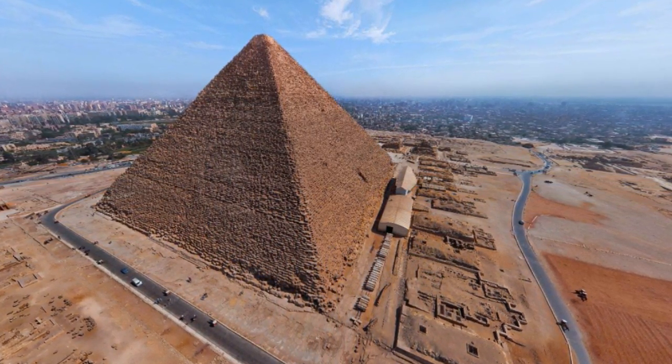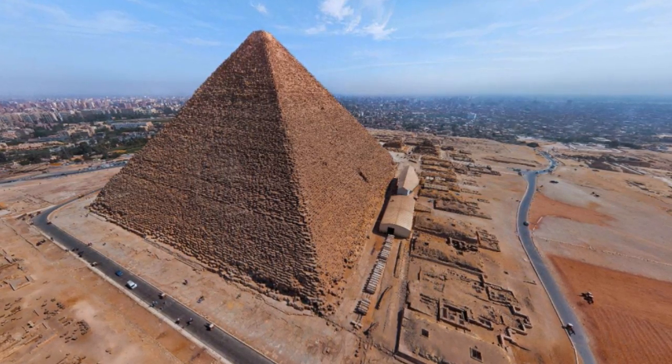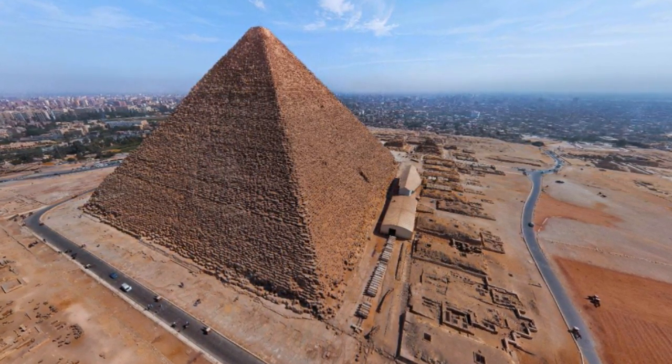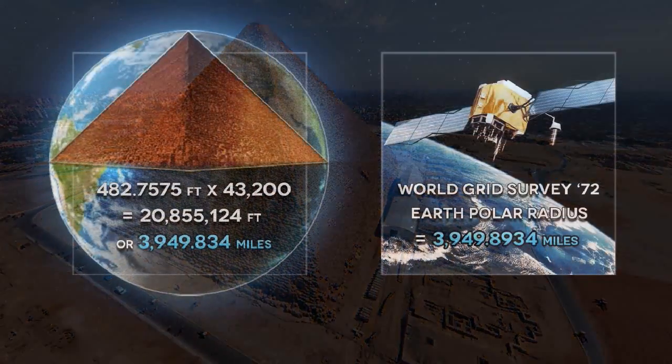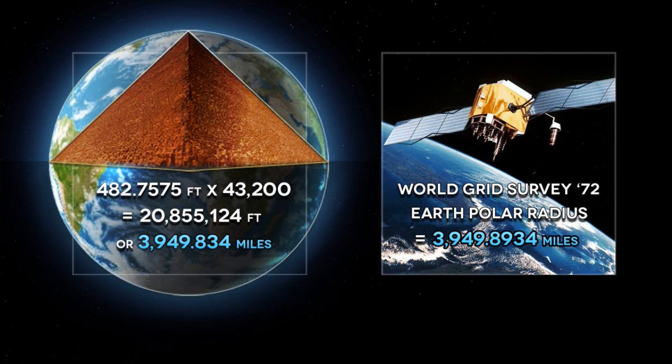With regard to the precession of the equinoxes, there is another amazing coincidence, and that is the height and perimeter of the pyramid multiplied by 43,200 is the Earth's polar radius and equatorial circumference respectively.